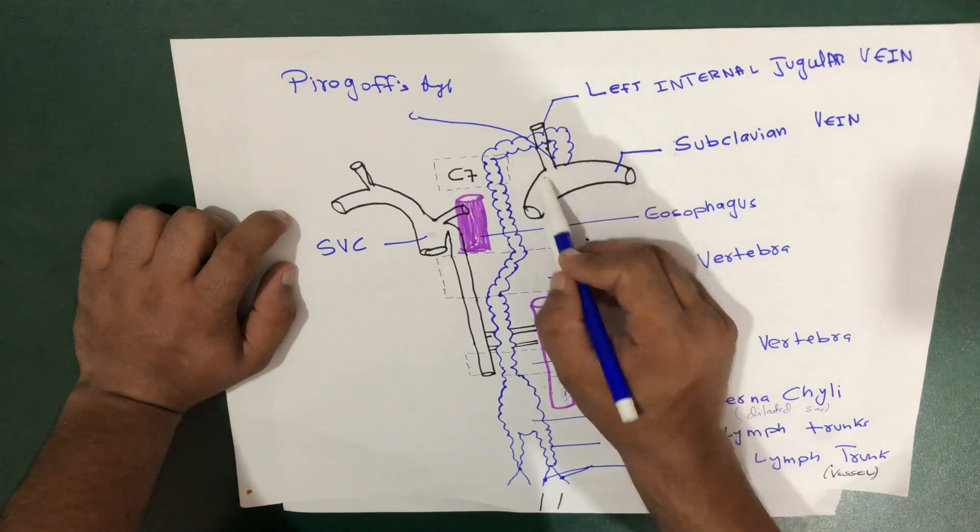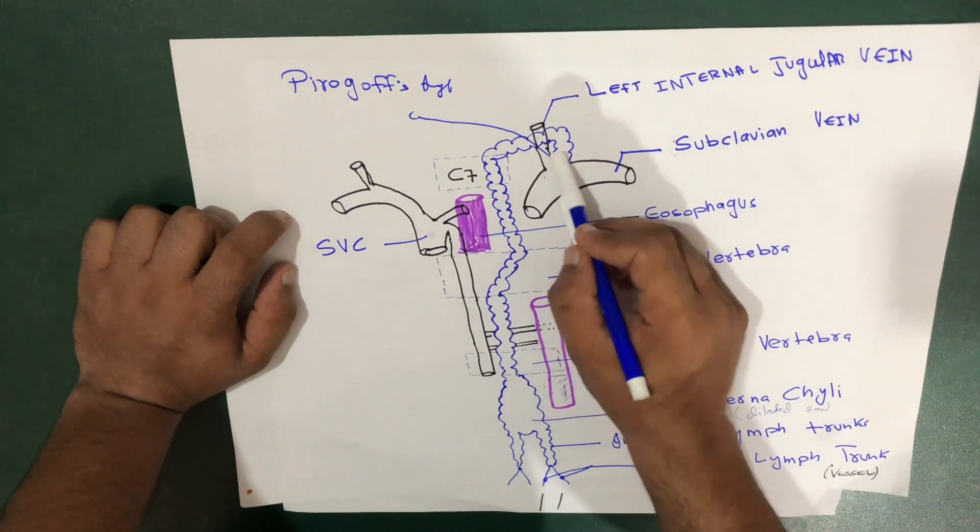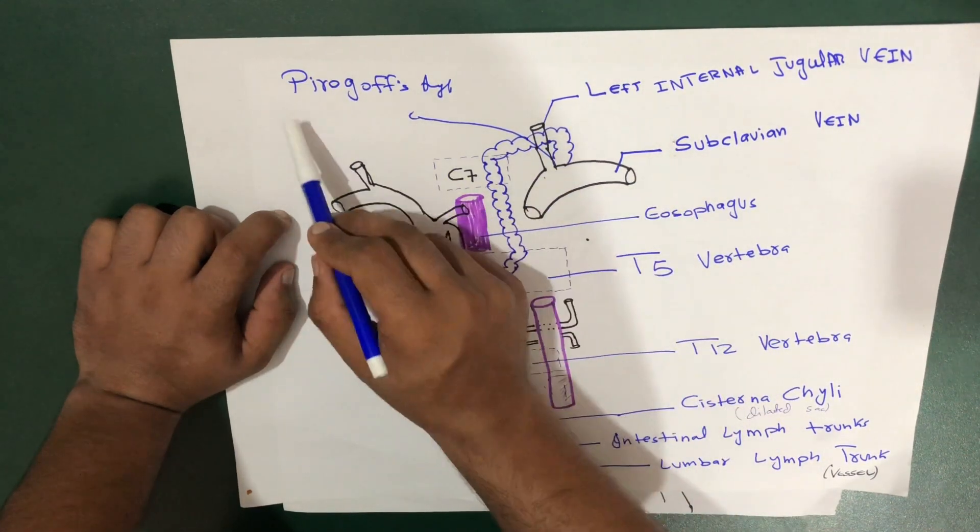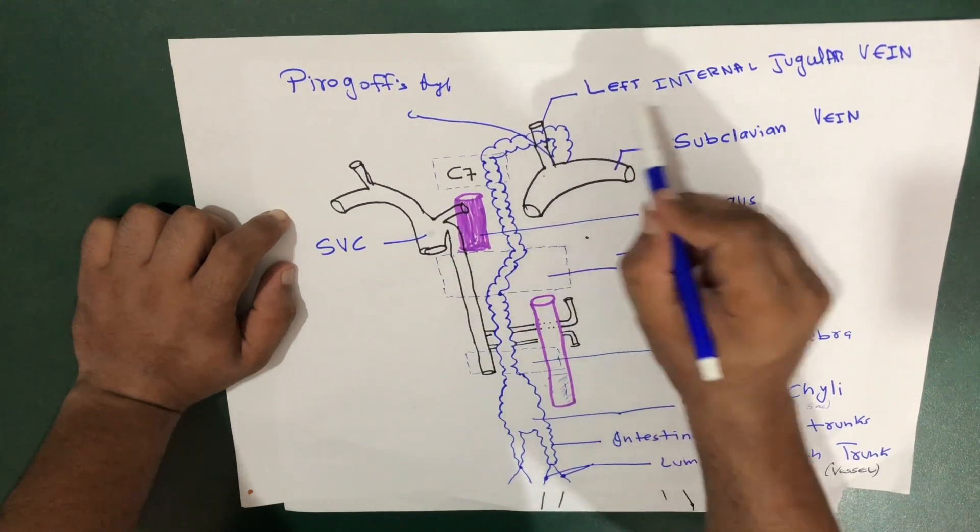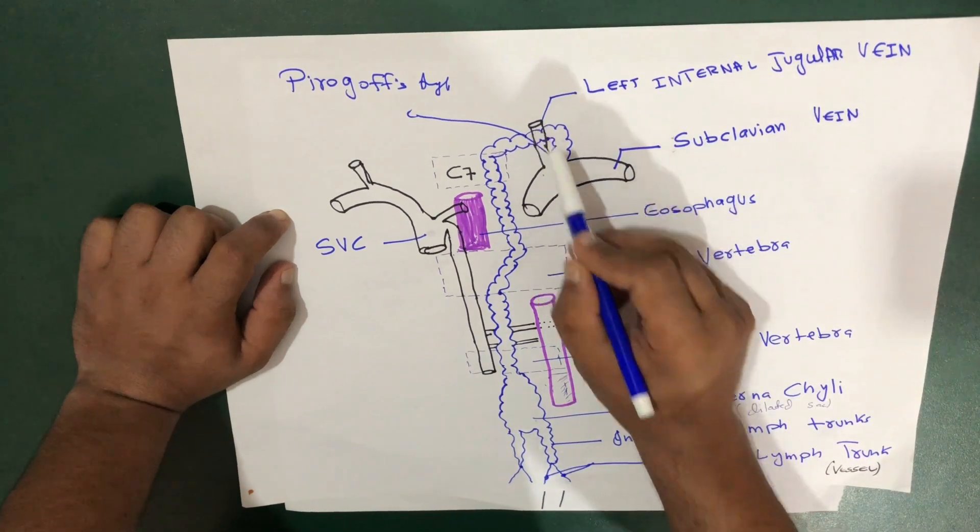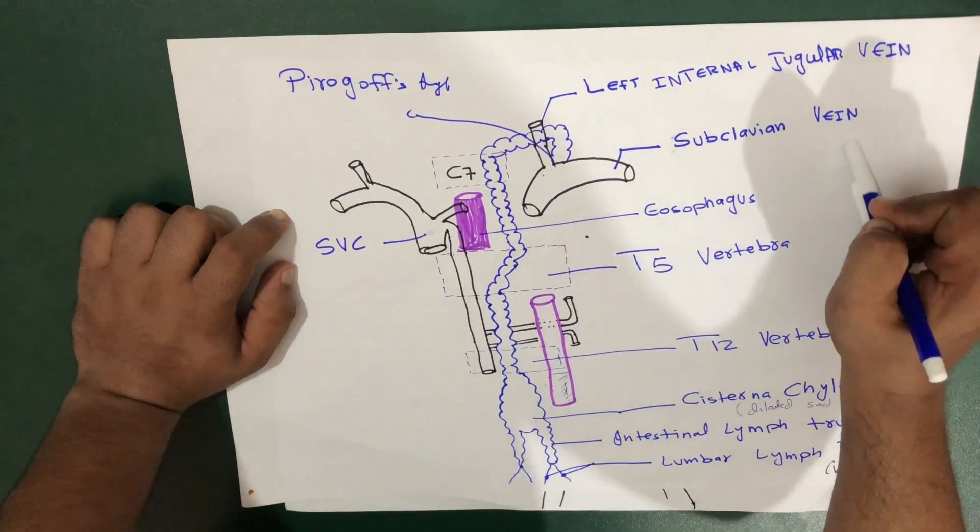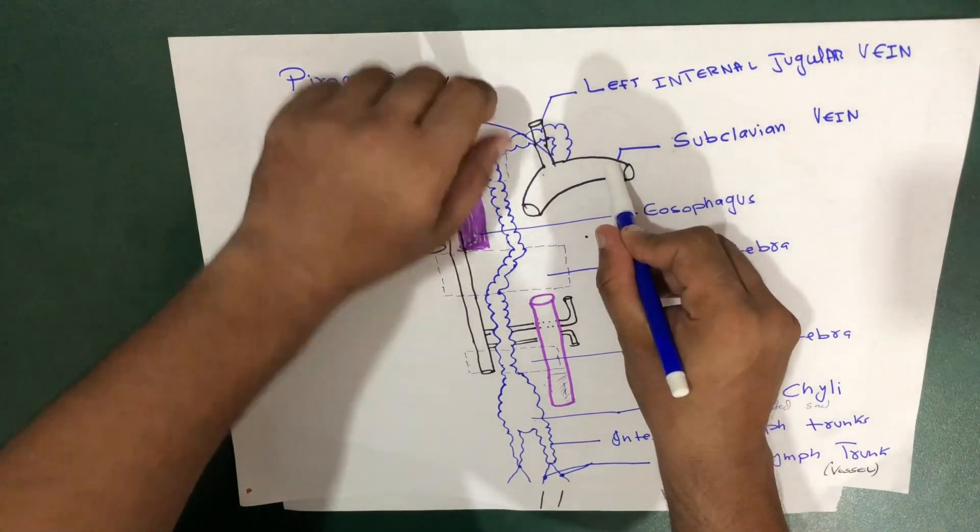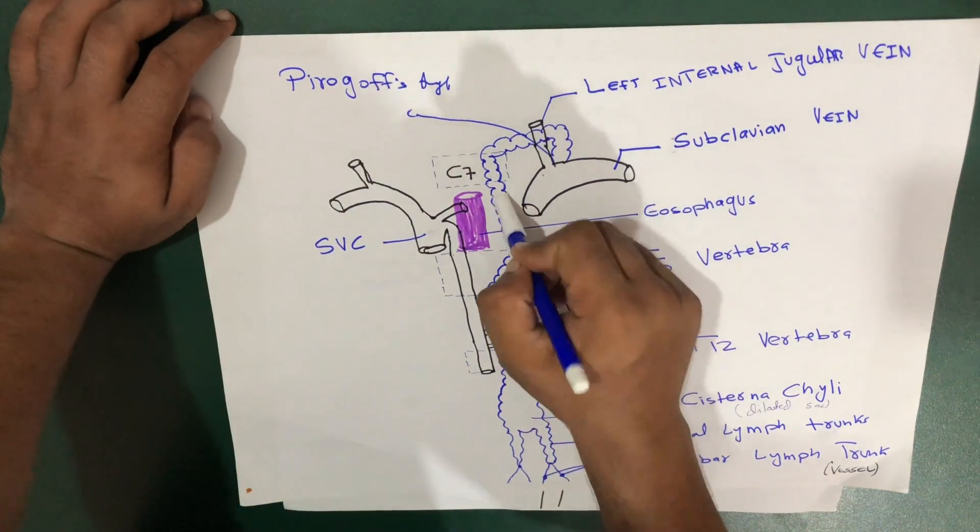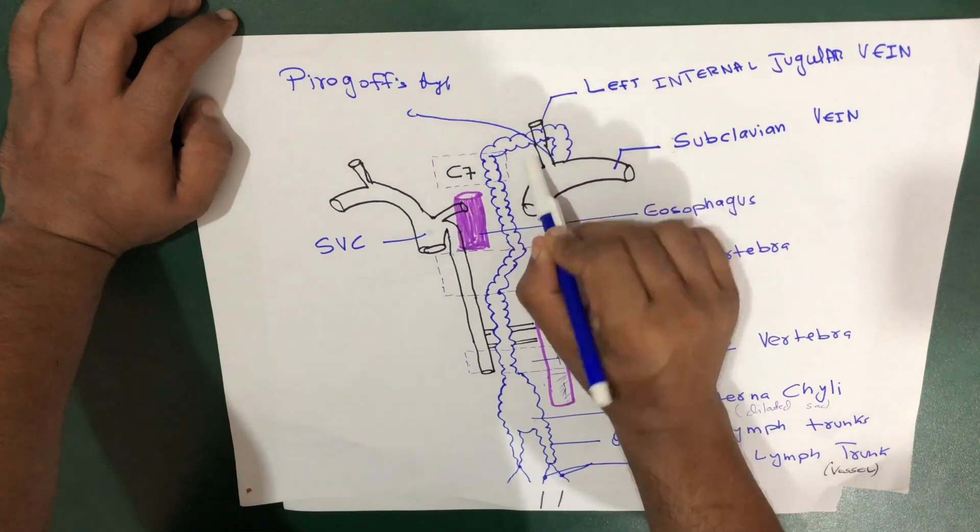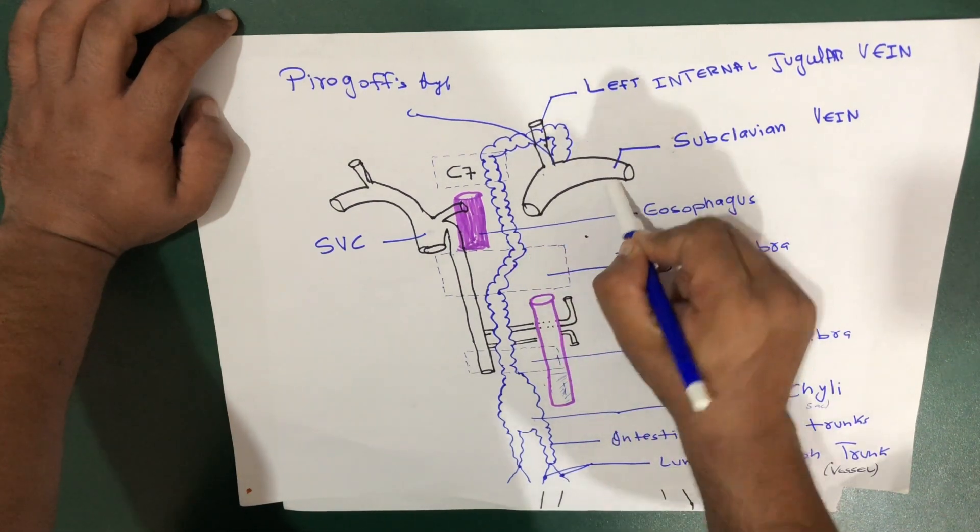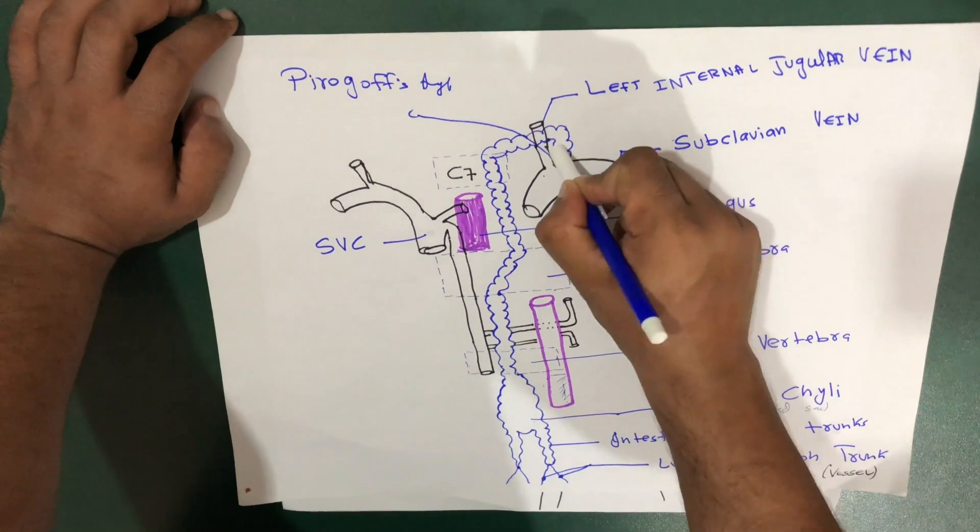At C7, it drains by forming an angle called Pirogov's angle. It drains between the left internal jugular vein and subclavian vein. Remember that the thoracic duct drains between the left internal jugular vein and subclavian vein at Pirogov's angle.